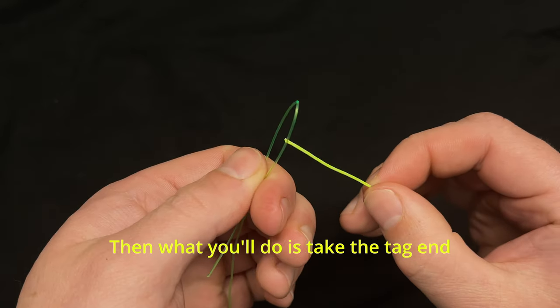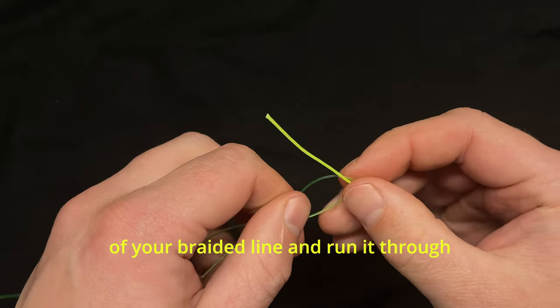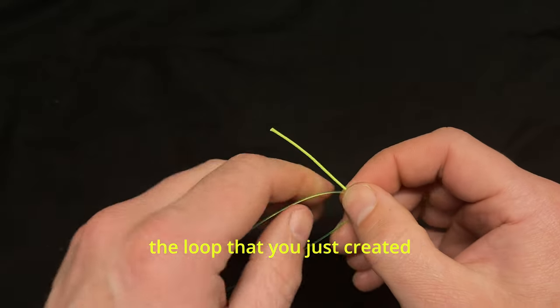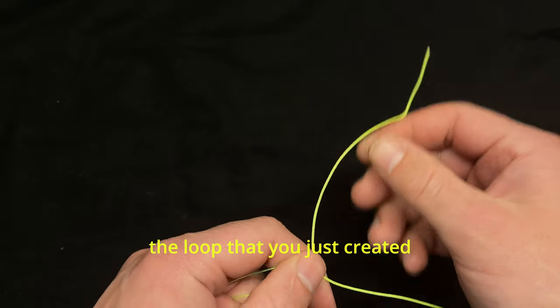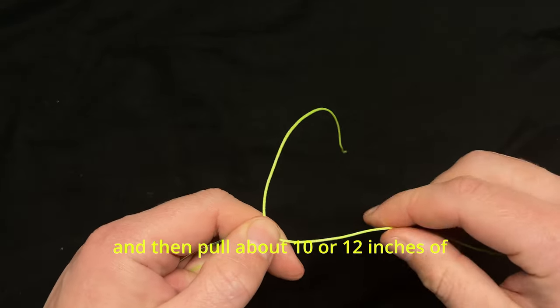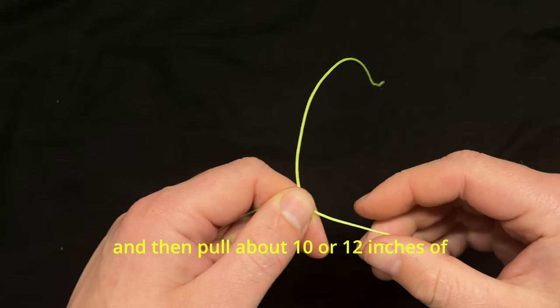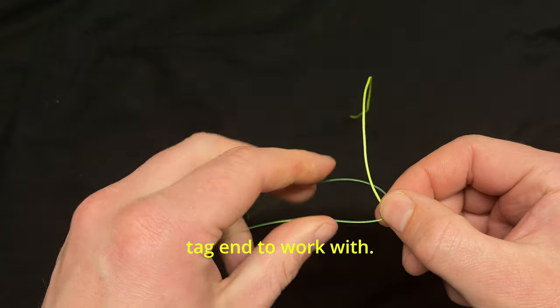Then take the tag end of your braided line and run it through the loop that you just created, and pull about 10 or 12 inches of tag end to work with.